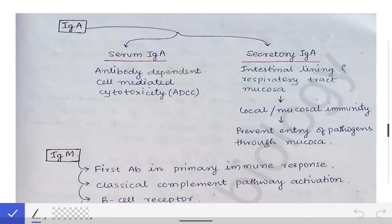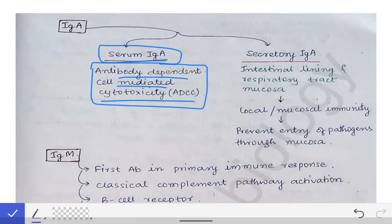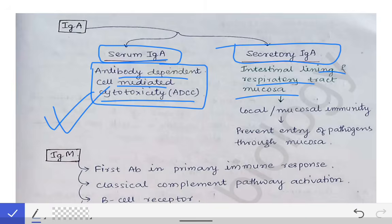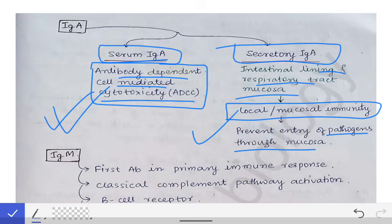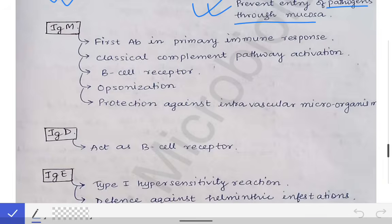Now come to the IgA antibody. Since IgA is available in two forms — monomeric and dimeric — there are two types of IgA: serum IgA, which helps in antibody-dependent cell-mediated cytotoxicity (ADCC), and secretory IgA, which is present in the intestinal lining and the respiratory tract mucosa. Secretory IgA provides local and mucosal immunity and prevents entry of pathogens through the mucosa.